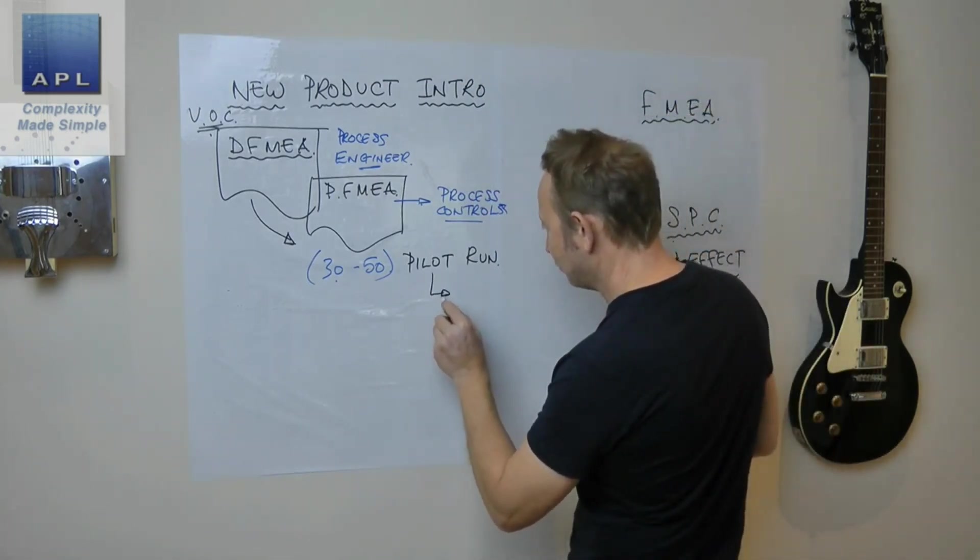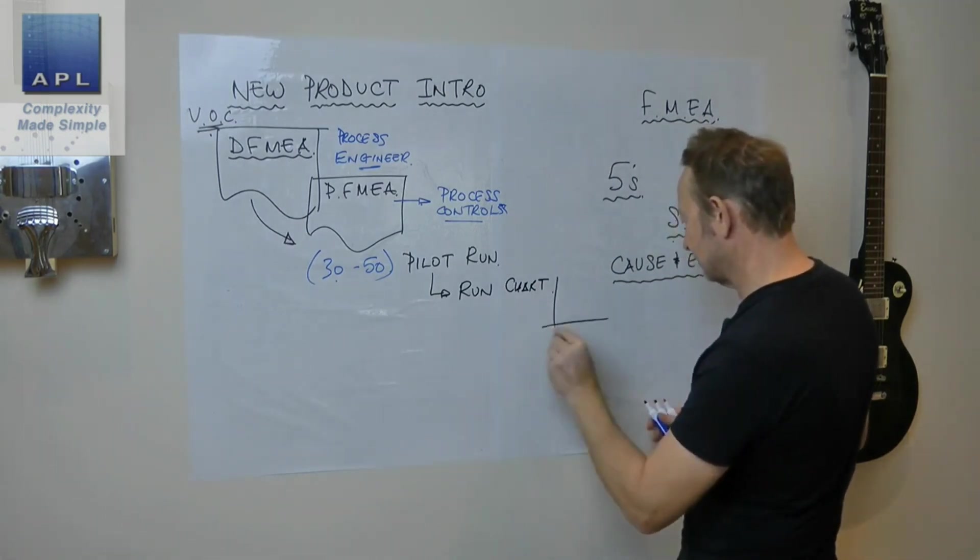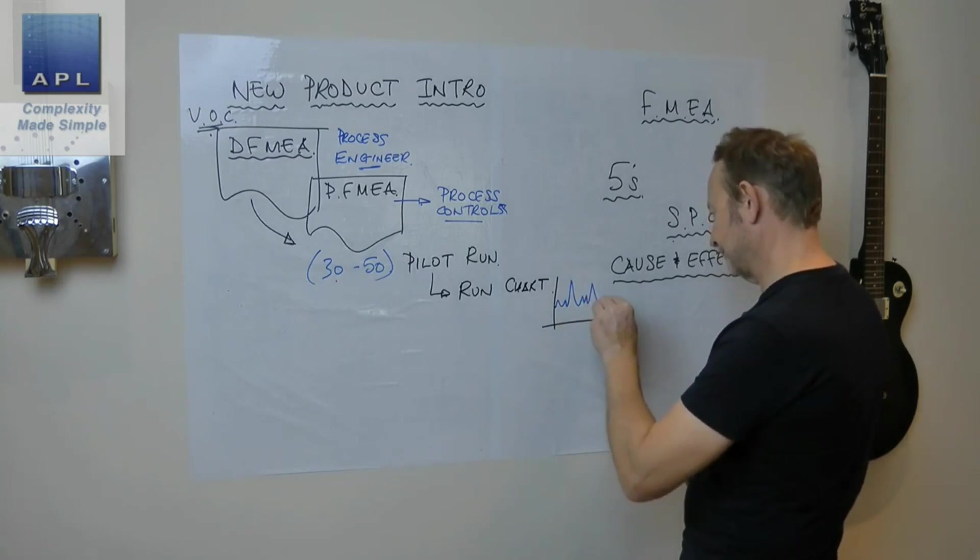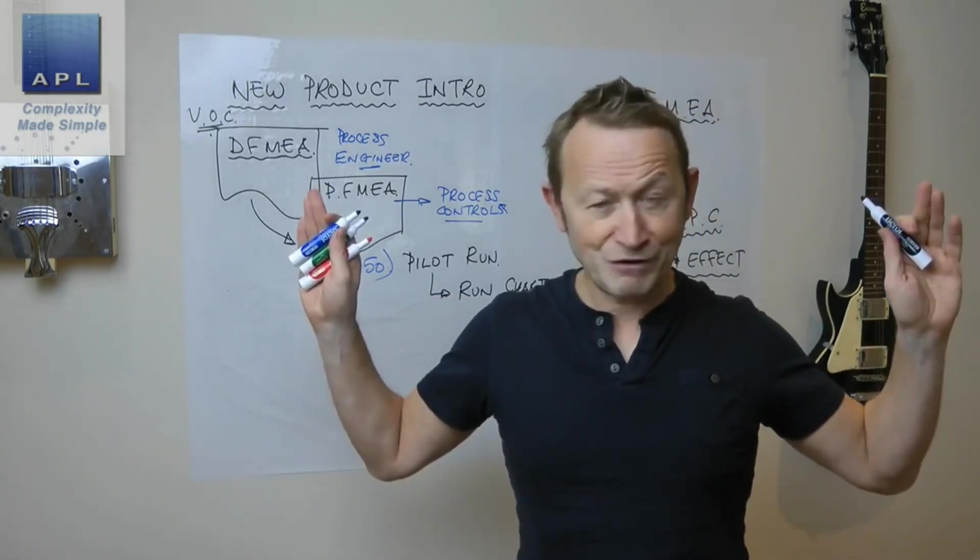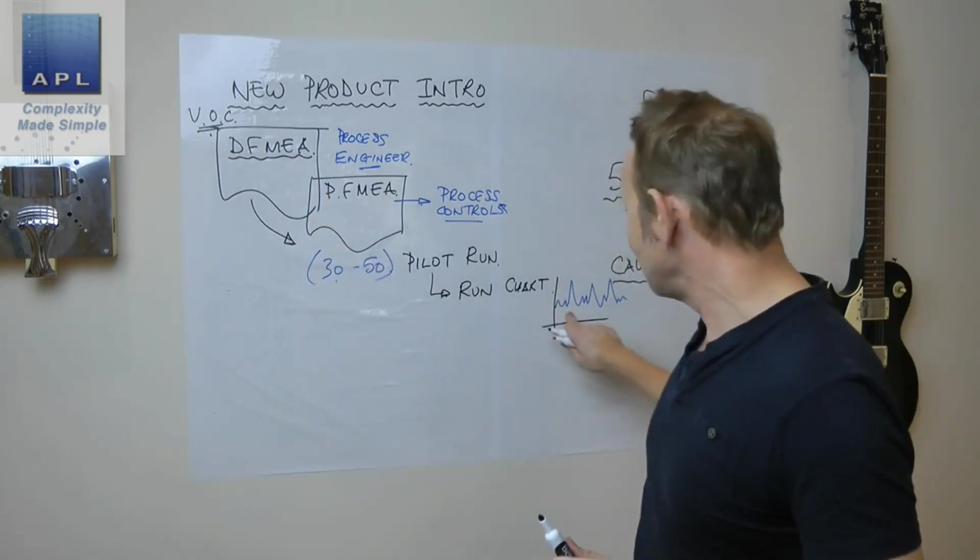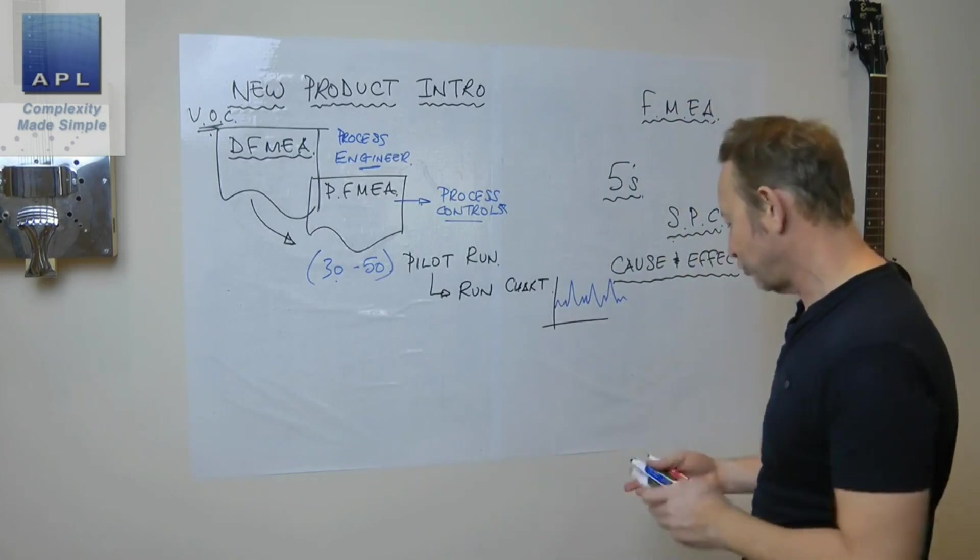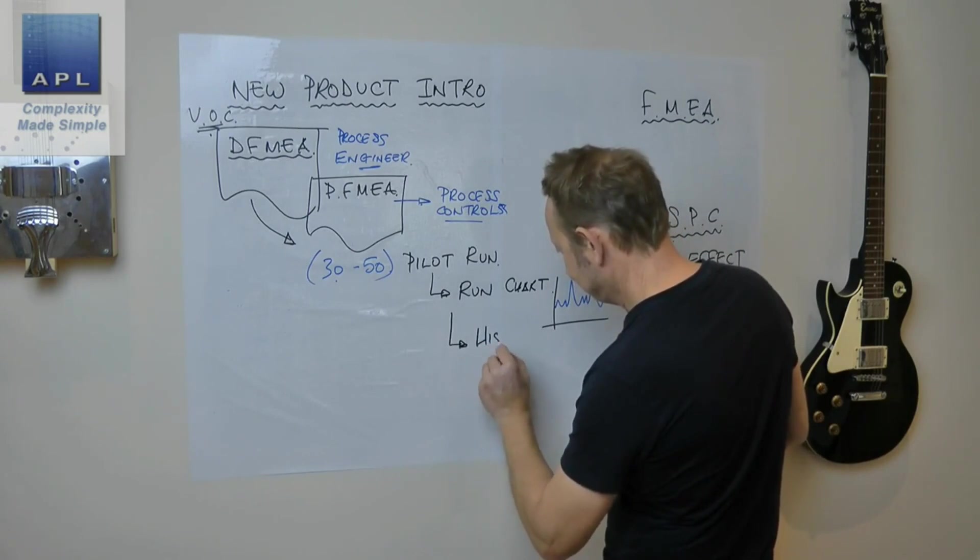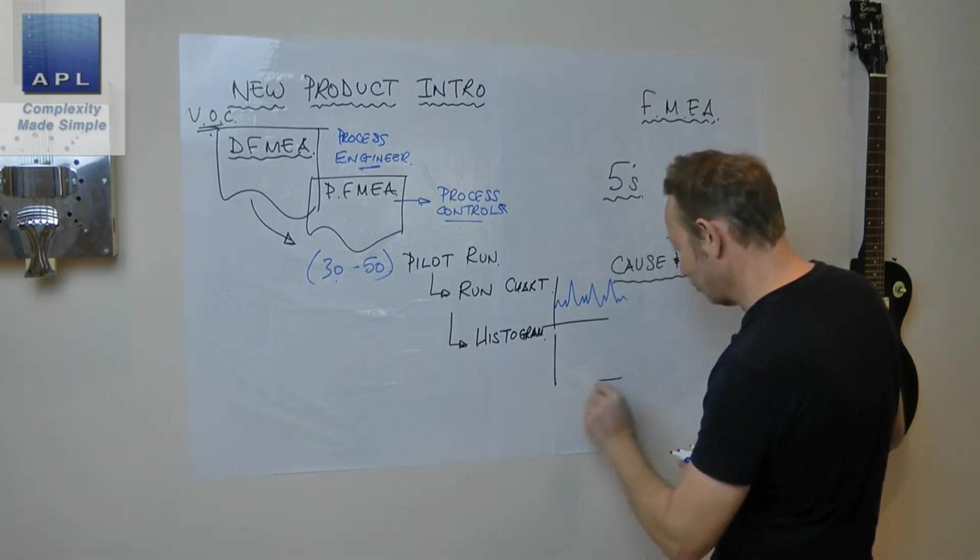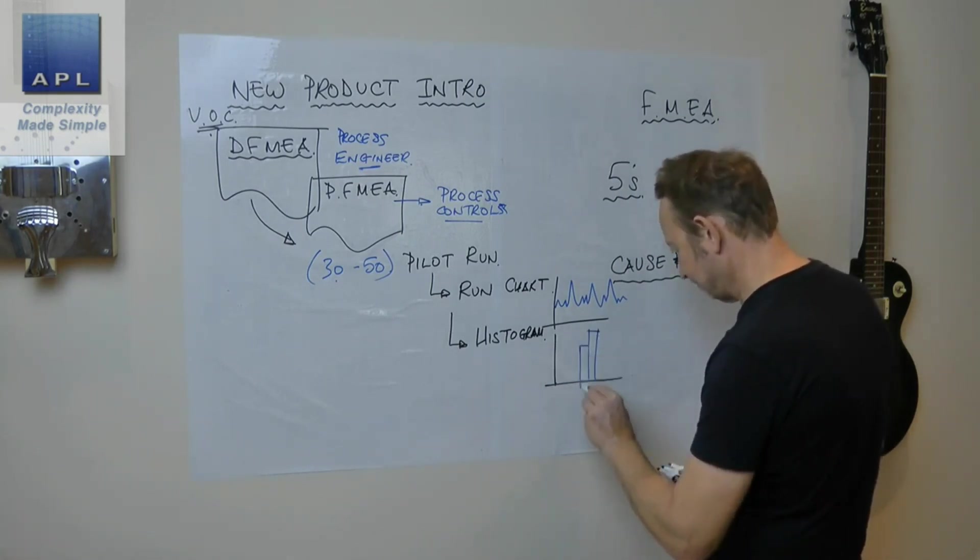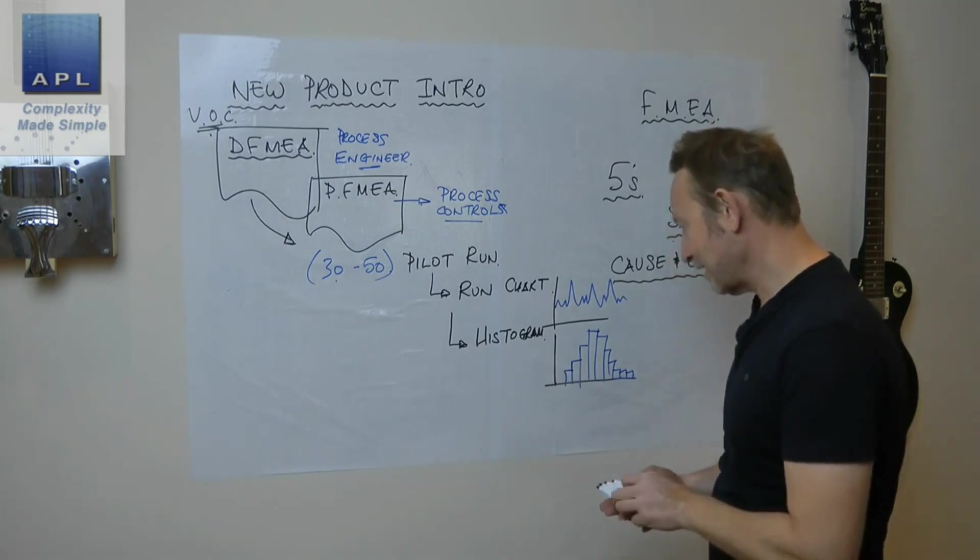When we start looking at dimensions, what tools are we going to use? We're going to do a run chart first. What does this thing look like? Something else about the pilot run: 30 to 50, hands off, don't touch the process. We want to see real data here, we want real process information. Can only get that by taking your hands off. We're going to go run chart, then we're going to go histogram. We want to take some pictures here.